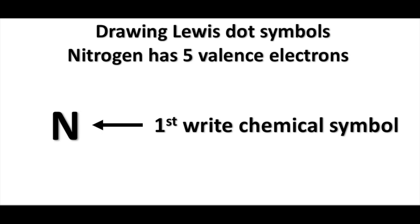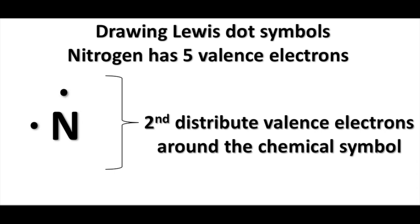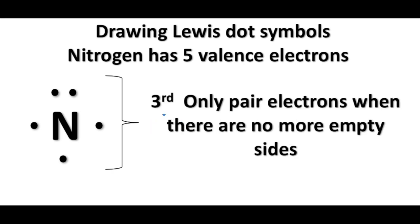Let's go ahead and place the dots around nitrogen. It does not matter where you start, so I will begin on the left side of nitrogen and go around placing four dots around. Since there are no more empty sides, I will begin pairing the electrons. The final product will look like the following.